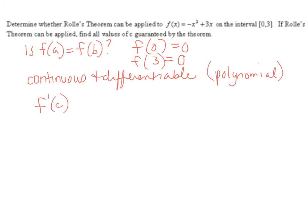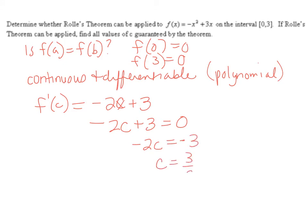So now the last thing is to find all C such that f prime of C equals zero. So that means take the derivative. I have negative two x plus three as my derivative. Put a C in here and set that equal to zero. So I have negative two C equals negative three. So C is three halves. And then I always check — is three halves in the interval? Yes. That's my value of C.